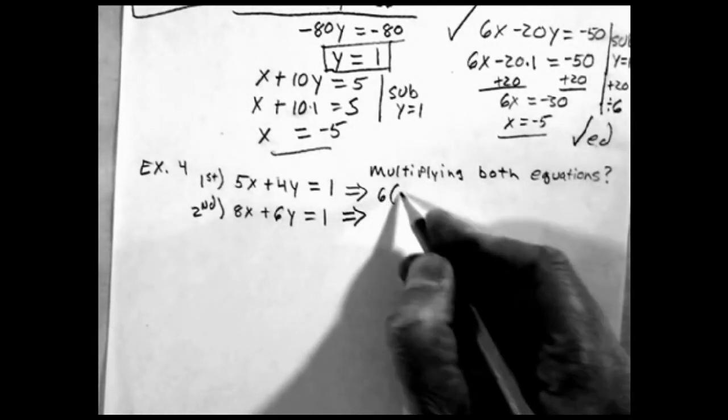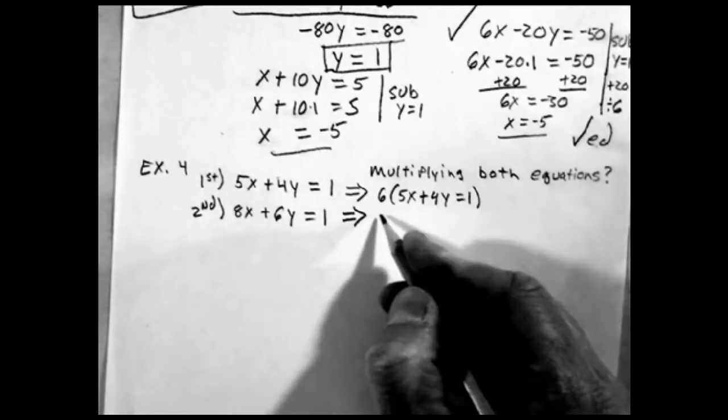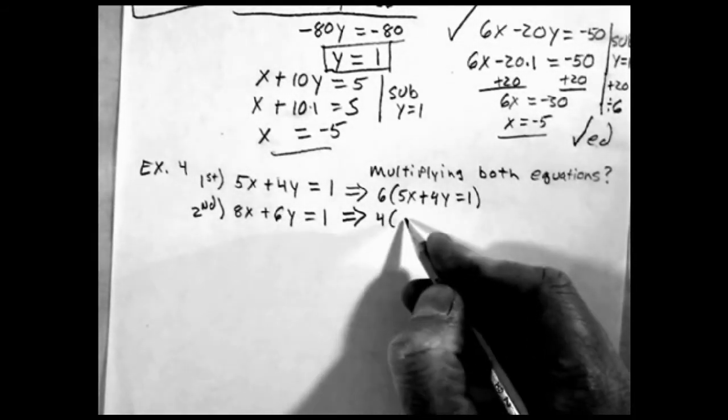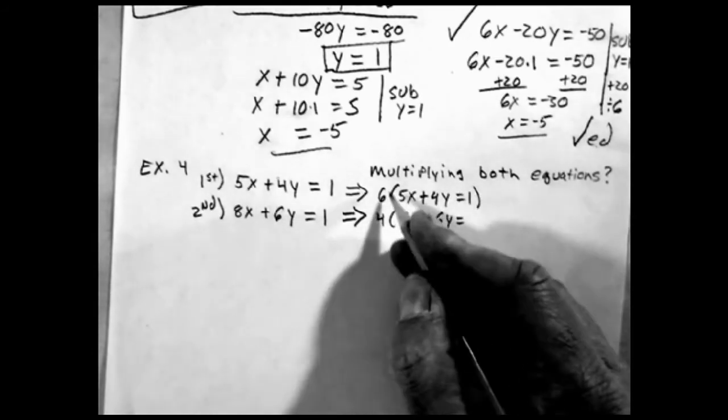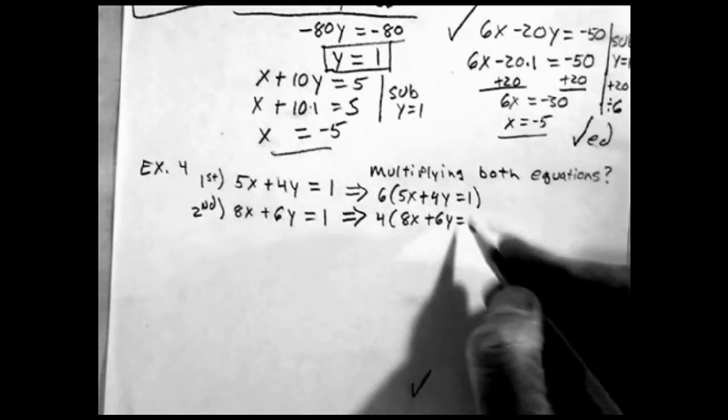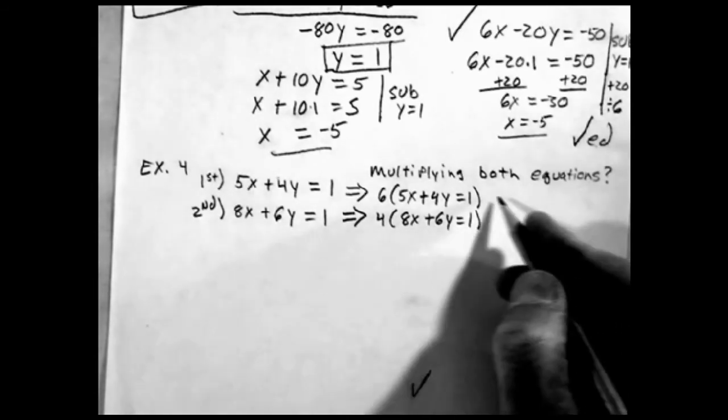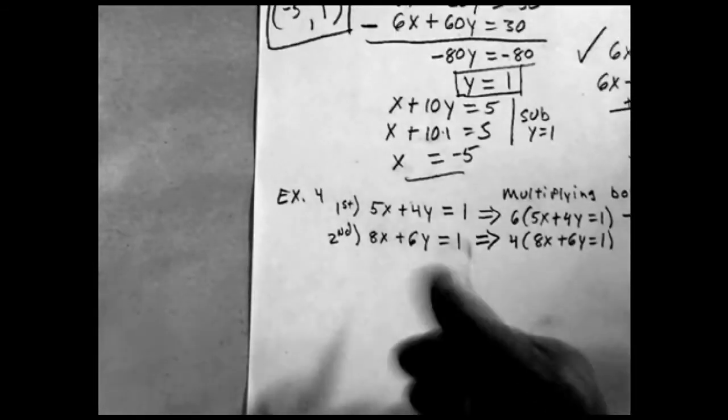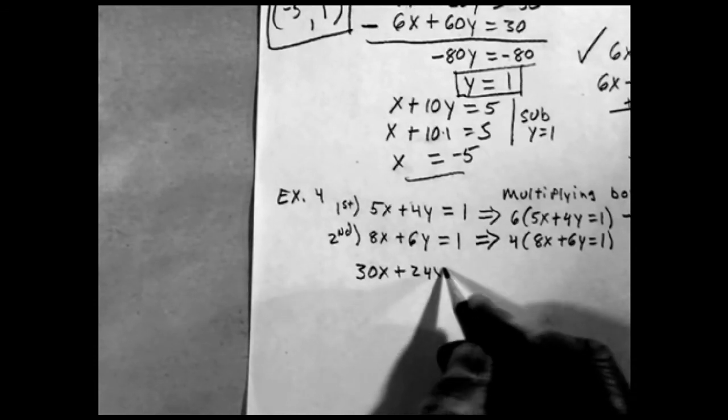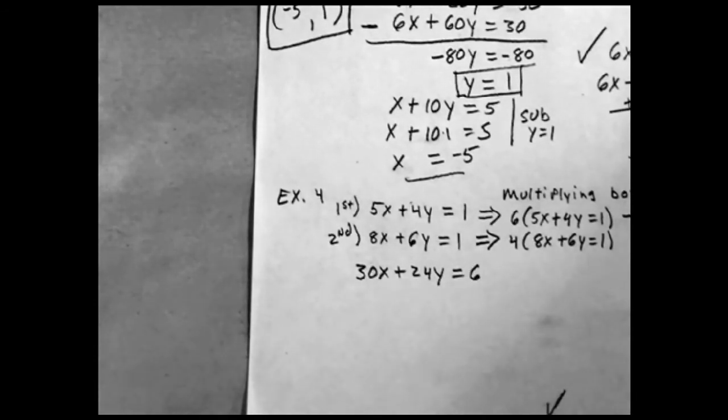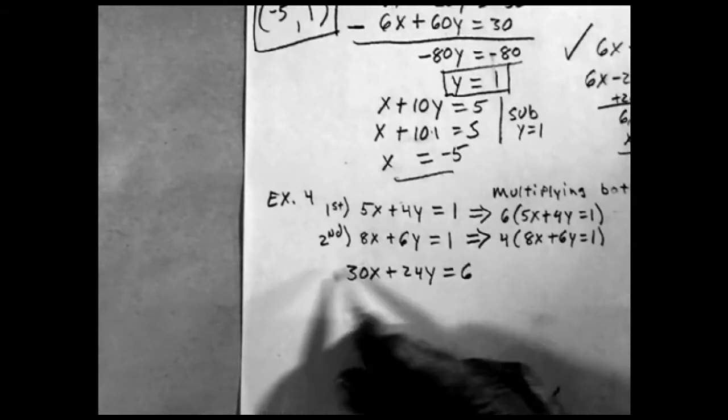Multiply by 6. Multiply this one by 4. I don't really like this syntax where you're distributing across the equal sign. I'm going to put the answers down here.